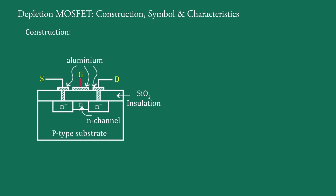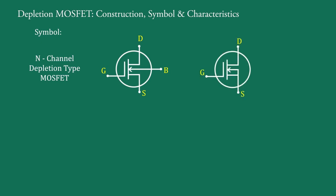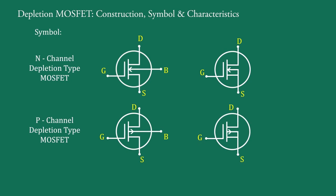The symbol of N-channel depletion type MOSFET is like this. This substrate terminal B is internally connected to the source S, so it is also symbolized like this. In P-channel depletion type MOSFET, this arrow is in outward direction.